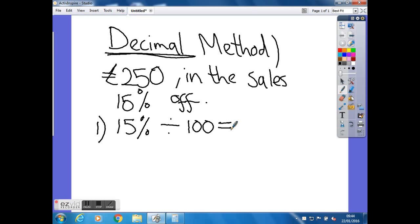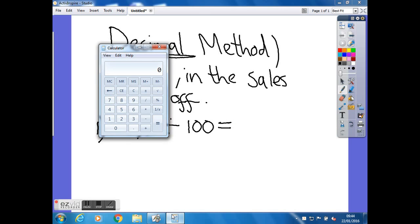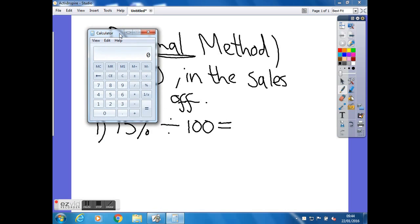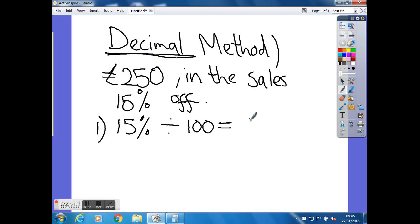And it's worth noting at this point that you are allowed a calculator for all these questions in the exam. So I'm just going to bring that up now and do 15. We don't need to worry about the percentage, we're just going to use the numbers. So 15 divided by 100 and see what that's equal to. So it's 0.15. So I'm going to write that as our answer.